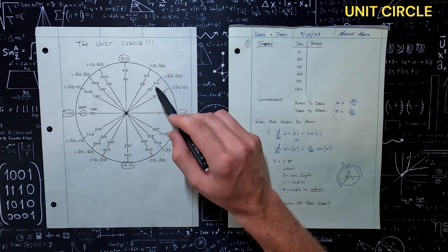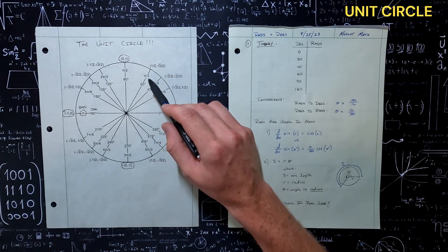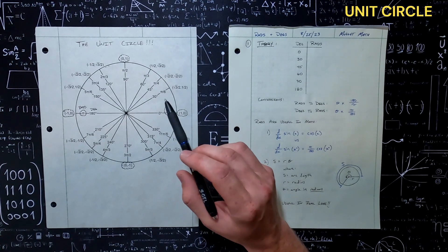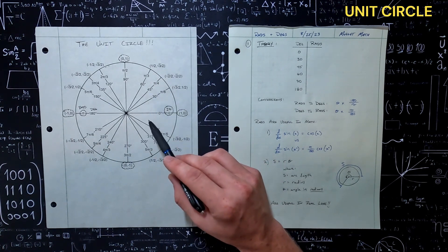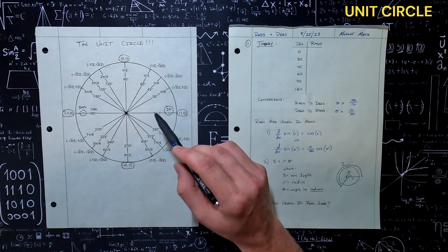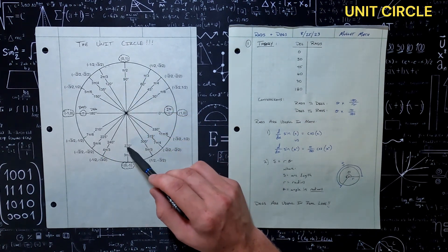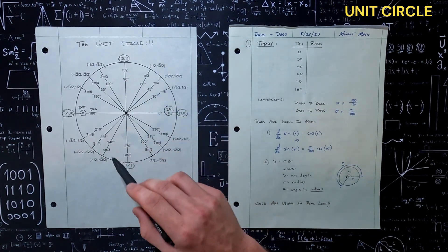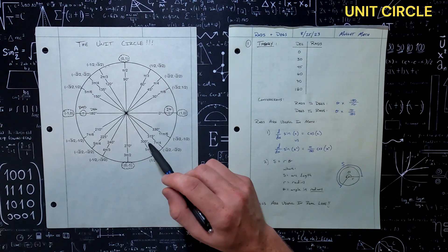At 45 degrees, we have pi over 4. And at 60 degrees, we have pi over 3, and so on. The easiest way to remember all of this is looking at the key angles: where we have 90 degrees, 180, 270, and 0.